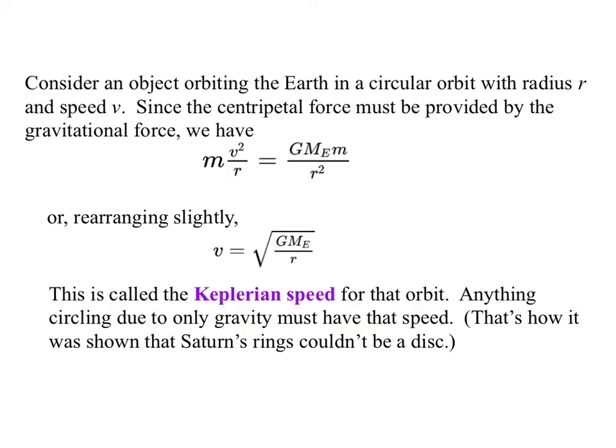Some applications. Consider an object that is orbiting the earth or other gravitational body in a circular orbit with radius r and speed v. Since the centripetal force must be provided by the gravitational force, we have that mv² over r is G times mass of the earth times m over r². And playing around with this and canceling the m's that are the same, we get that the velocity must be the square root of G times the mass of the earth over r. This is called the Keplerian speed for that orbit.